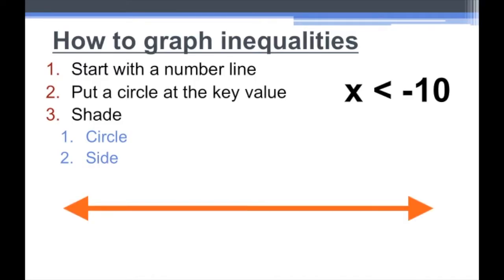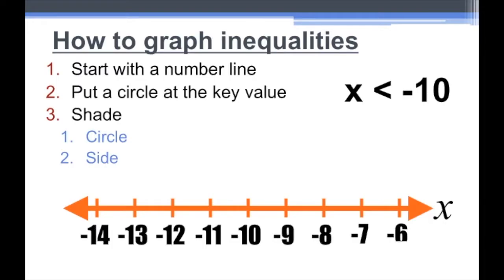Let's make our number line first, and designate what values we're talking about. We're talking about the variable x, so we put an x right there — everything here refers to x. We put numbers on the number line starting with our key value, which is negative ten, some numbers to the left and to the right. I like to put dashes in between to know that negative ten is here, negative 9.5, negative 9, negative 8.5, and so on — it helps me be more accurate. Now I put a circle on my key value, negative ten.